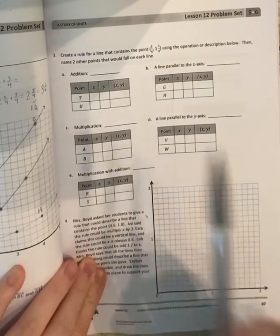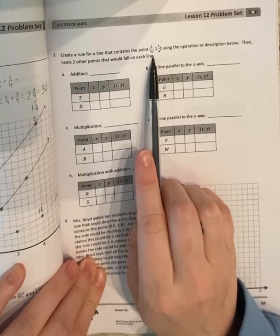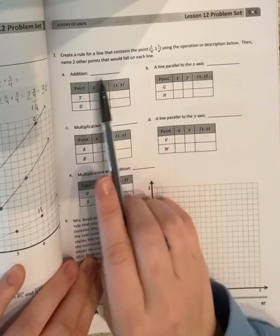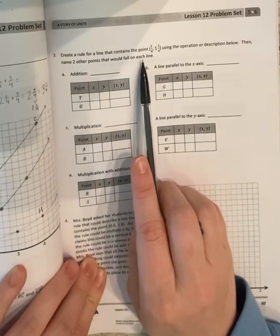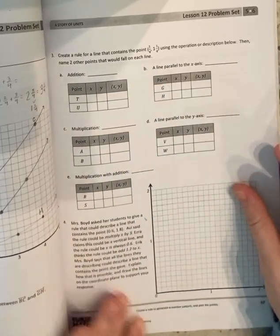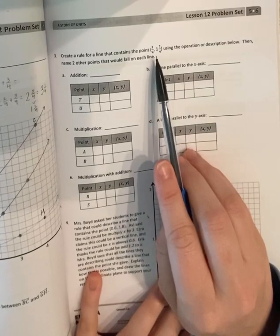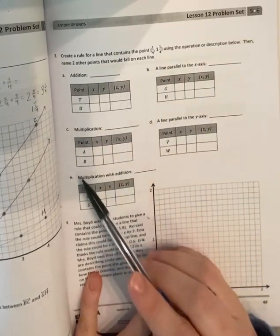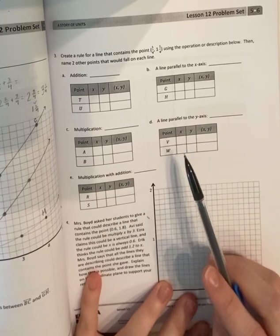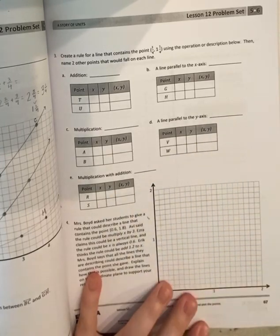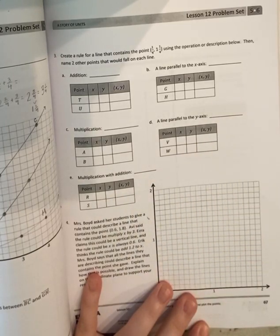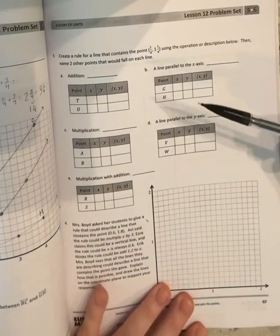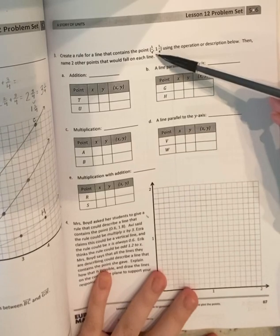It says create a rule for a line that contains the point one-fourth, one and one-fourth using the operation or description below, then name two other points that would fall on the line. So basically what they're doing is they're giving us one point and that one point will fit on all of these lines. And they've given us a description of an operation that you have to do to apply to that point.